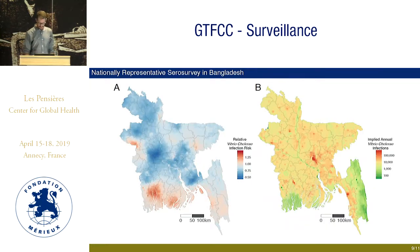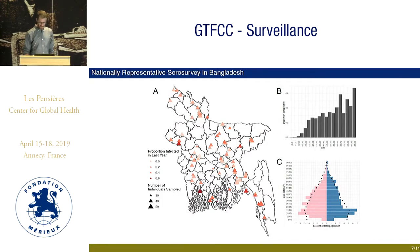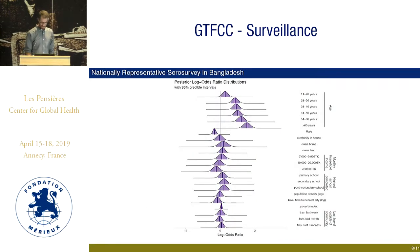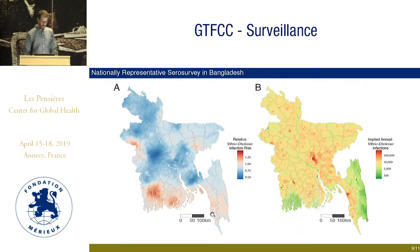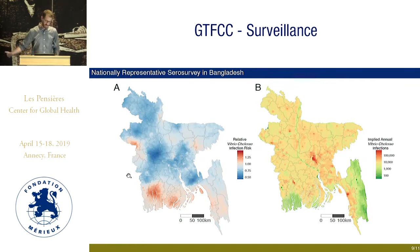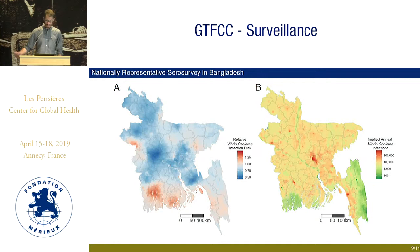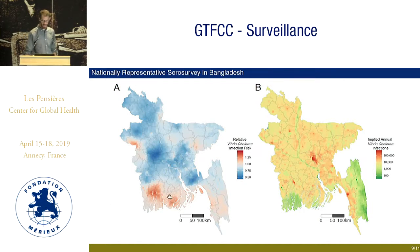We can take these estimates and use covariates — things like travel time and poverty index — to create smooth maps of infection incidence across the country, here presented as relative risk. Places in red are at higher risk, places in blue at lower risk. We see down in the Delta quite a high risk of having been recently infected.